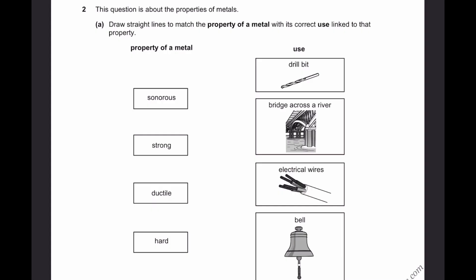Question 2. This question is about the properties of metals. Draw straight lines to match the property of a metal with correct use, linked to that property. So the property of the metal is sonorous. What do you mean by sonorous? It produces sound. So sonorous means produces sound.